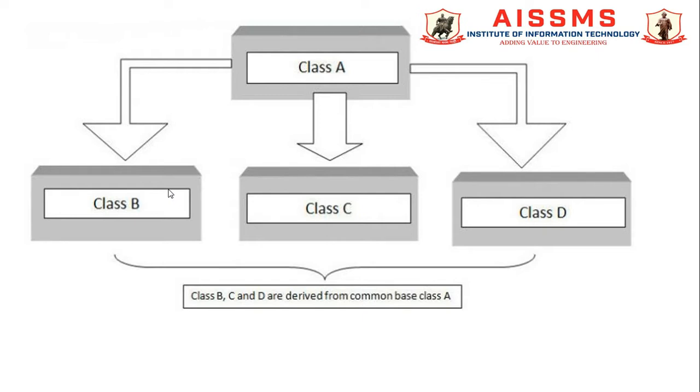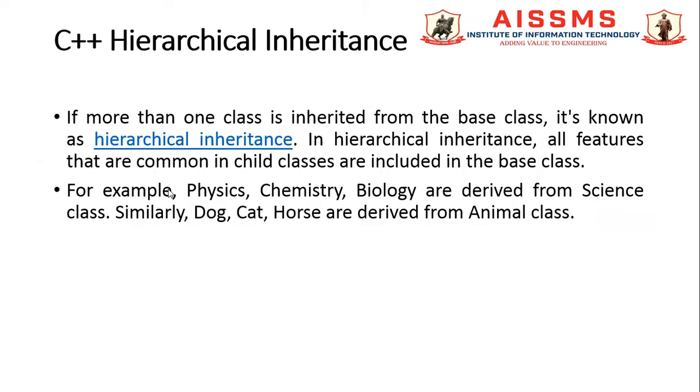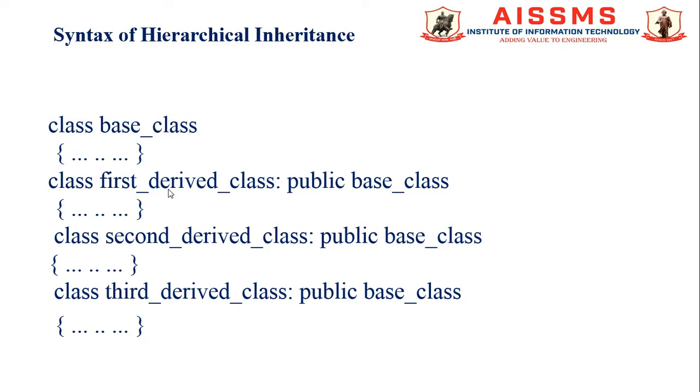A subclass can inherit all or some of the features from the base class. In this diagram, B, C and D are the inherited or derived classes from superclass or parent class A. So all B, C and D will collect or extract the features of class A.